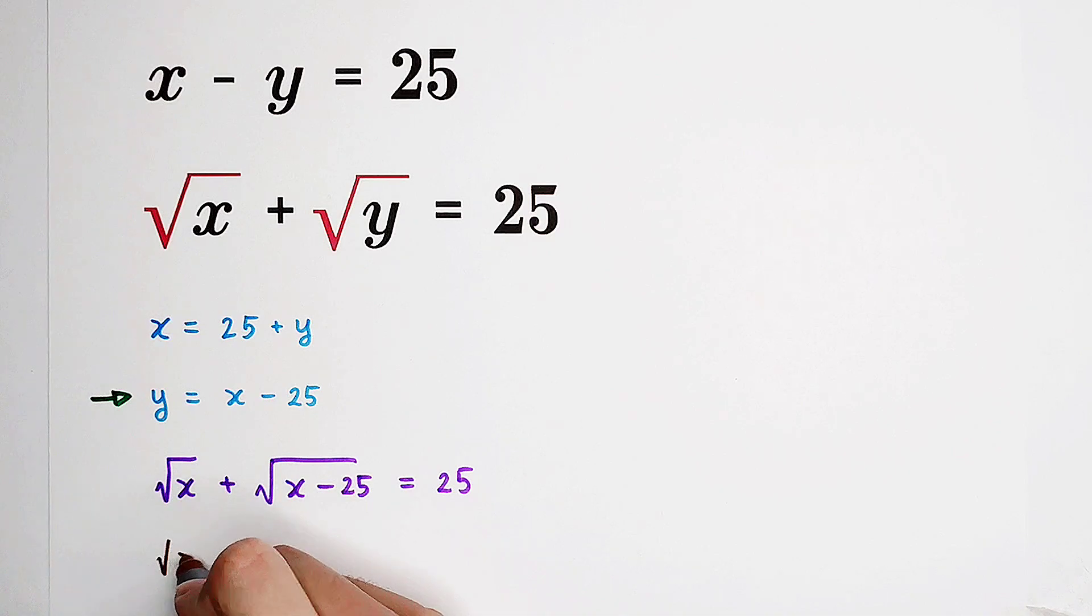So you can see, square root of x minus 25 equals 25 minus square root of x. Square both sides.